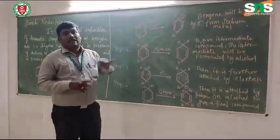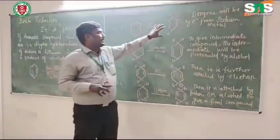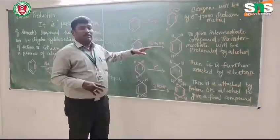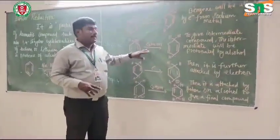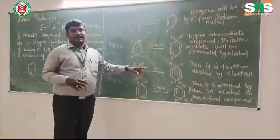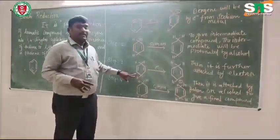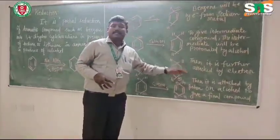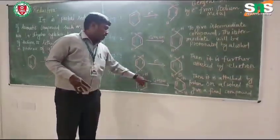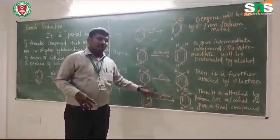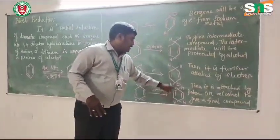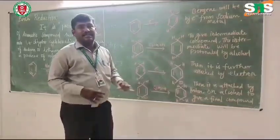So this involves four steps: first, the attack of an electron to give the radical anion intermediate; second, protonation by the alcohol; third, a further attack of an electron to give another intermediate; and fourth, protonation by the alcohol to give the final product — 1,4-dihydrocyclohexadiene.